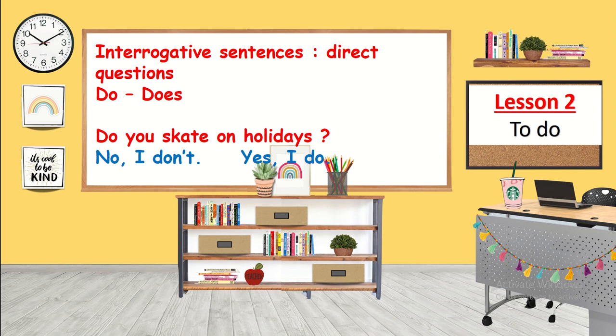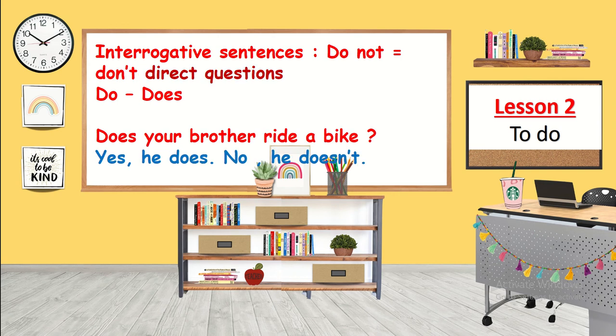For interrogative sentences, when we ask directly, we use 'do' or 'does'. For example: Do you skate on holidays? Yes, I do. Or: No, I don't. We use 'do' with I, you, we, and they, and 'does' with the third person singular — he, she, it, or nouns. For example: Does your brother ride a bike? Yes, he does. Or: No, he doesn't.